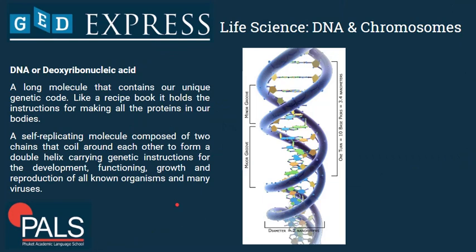So DNA, or deoxyribonucleic acid — a more general and easy definition is: a long molecule that contains our unique genetic code. Like a recipe book, it holds the instructions for making all the proteins in our body. A more technical definition: it is a self-replicating molecule composed of two chains that coil around each other to form a double helix, carrying the genetic instructions for the development, functioning, growth, and reproduction of all known organisms and many viruses.